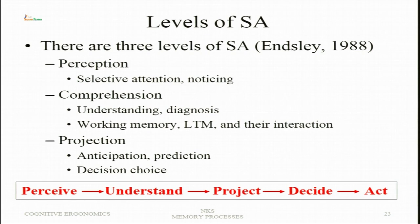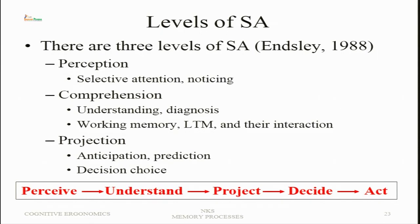There are three levels of situation awareness: perception (where selective attention and noticing play an important role); comprehension (understanding and diagnosis, where working memory and long-term memory interaction becomes important); and projection (anticipation, prediction, and decision choice). The sequence is: perceive, understand, project, decide, act. In driving, for example, all of this happens at a very fast speed because anything can change in the external environment.